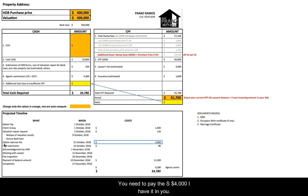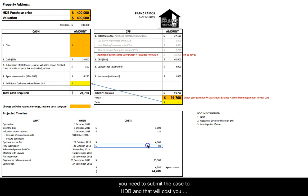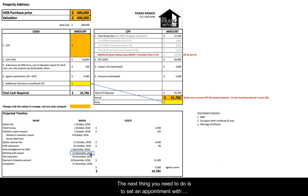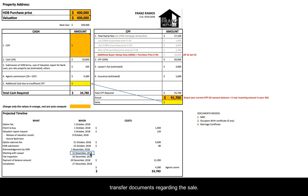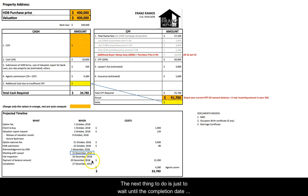Once you're happy with the valuation result, have secured a bank loan, and have a law firm to handle your conveyancing, you can proceed to exercise the option — you need to pay $4,000. The following day after exercising the option, you need to submit the case to HDB, which costs $80. Once done, they will send you an SMS notification. The next step is to set an appointment with your law firm to sign the necessary transfer documents regarding the sale. They will also give you a computation similar to this one.